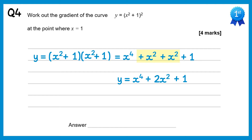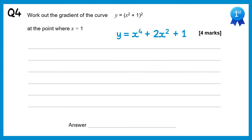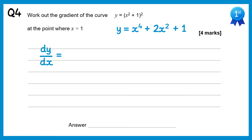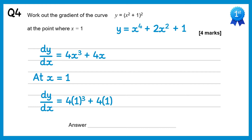Now that we have the equation in this form it becomes easier to differentiate. dy/dx: x to the power 4 differentiates to give 4x cubed, plus 2x squared differentiates to give plus 4x, and the plus 1 differentiates to give 0. Finding the gradient when x equals 1: dy/dx equals 4 lots of 1 cubed plus 4 lots of 1. 4 lots of 1 cubed is 4 and 4 lots of 1 is also 4, so 4 add 4 gives you 8.